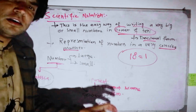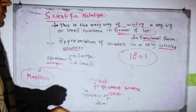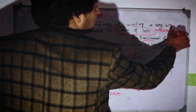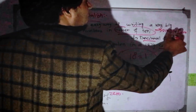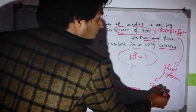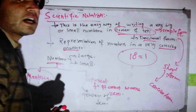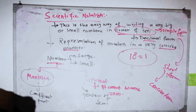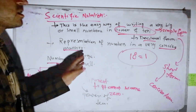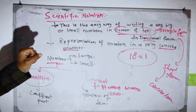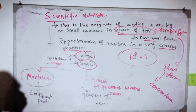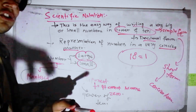Scientific notation is a simple, short form — a concise representation of numbers. If you have a simple form, you can use it for either a large number or a small number. The representation of numbers in a very concise manner allows you to use large or small numbers easily.